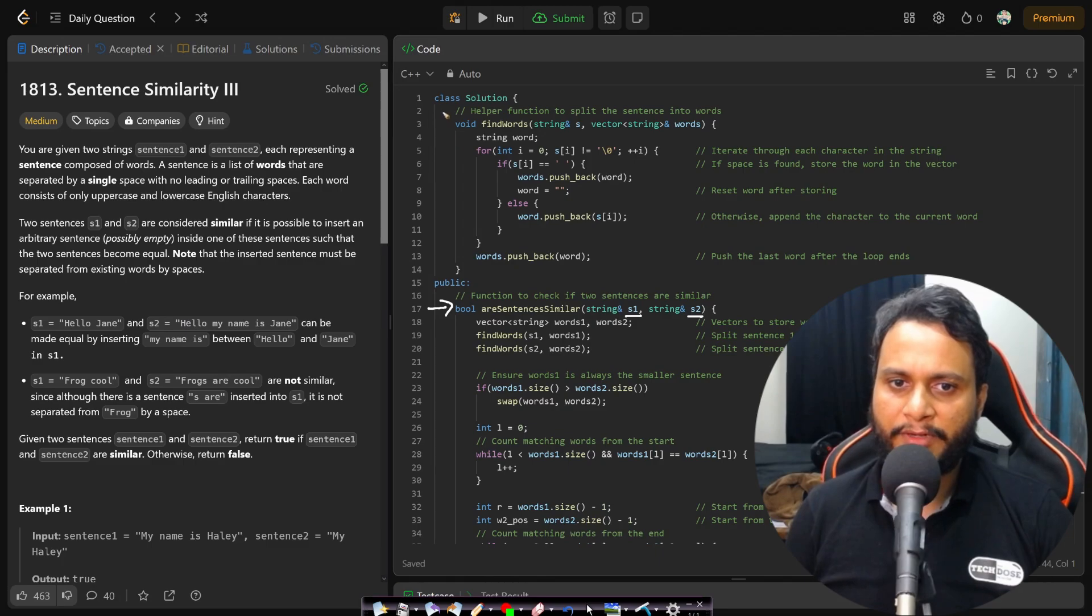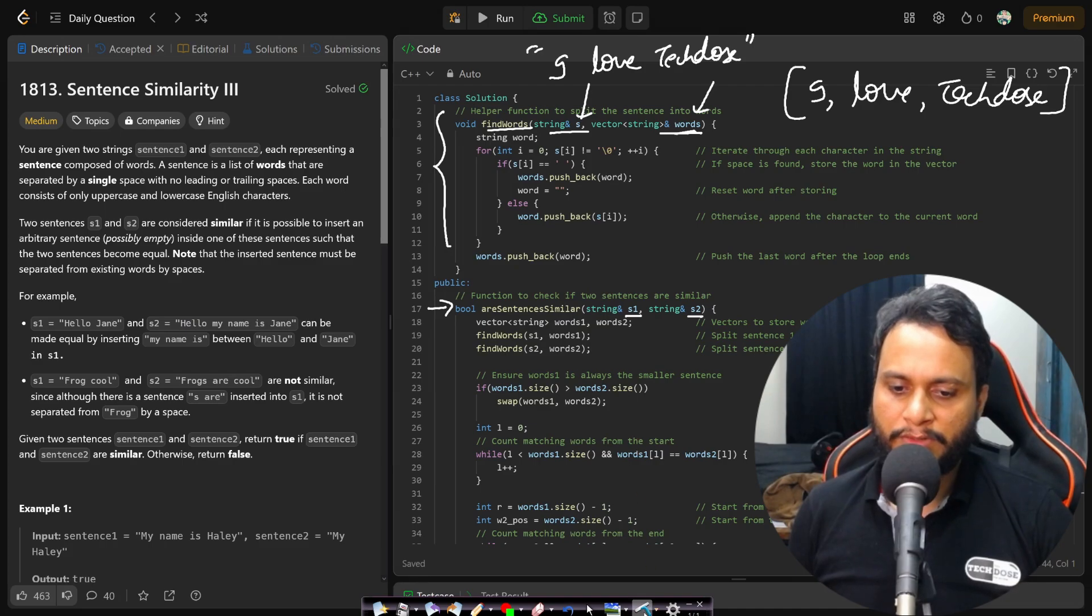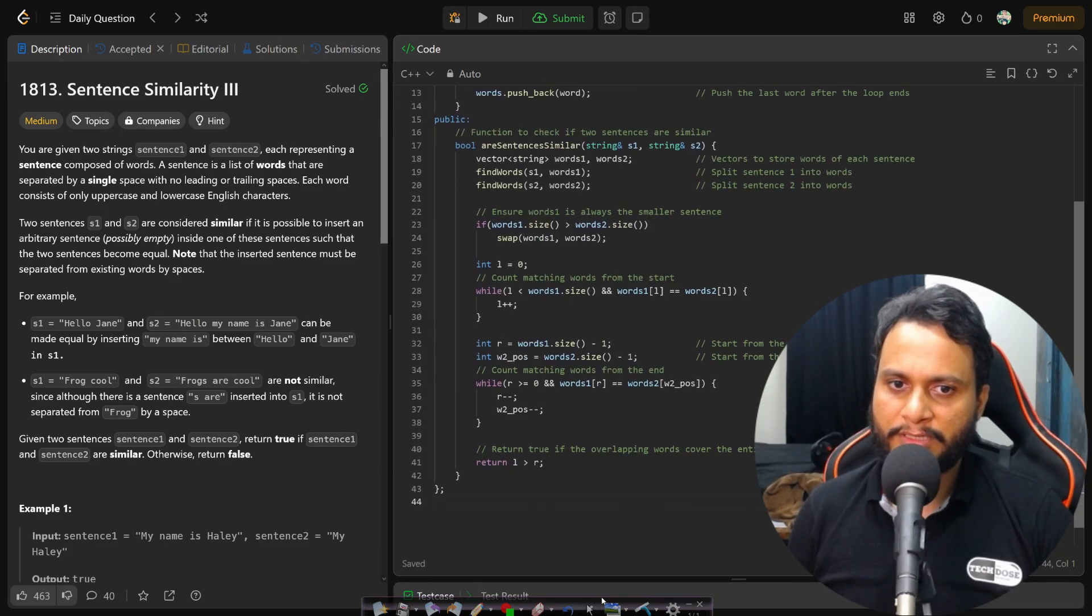Let's now look at the code. I have written a helper function where if you pass the string and an empty word list, then it will fill this empty word list by breaking down the string into words. Like if you have 'I love TakeDose' as one of the sentences in string, then the words will initially come as empty, but at the end it will have as input 'I love TakeDose'. So that will be the content of words once we are done with this entire findWords function. So that is my helper function. You can just go through it, it is easy to understand.